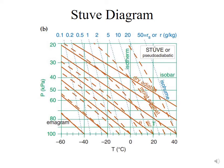The Stuve diagram is one of the four thermodynamic diagrams commonly used for weather analysis and forecasting. It was developed around 1927 by German meteorologist George Stuve and quickly gained widespread acceptance in the United States.